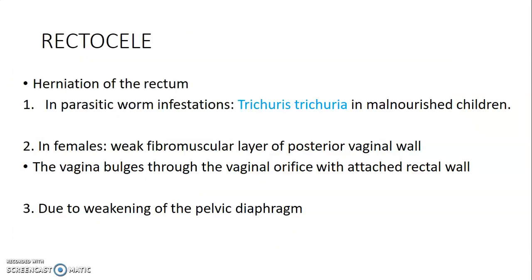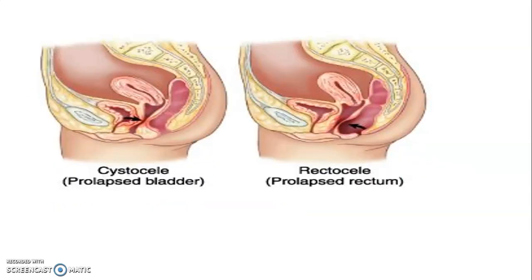Rectocele is a herniation of the rectum and is seen in three conditions: malnourished children with trichuriasis, females with a weak fibromuscular layer of the posterior vaginal wall, or due to weakening of the pelvic diaphragm. A cystocele involves the bladder herniating through the vagina, while a rectocele involves a prolapsed rectum through the posterior wall of the vagina.